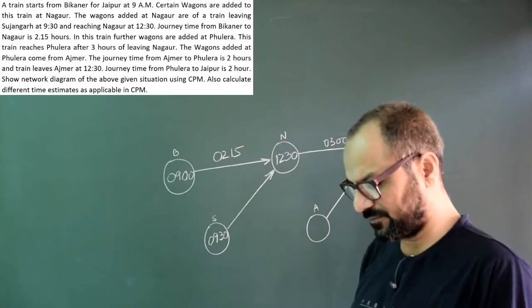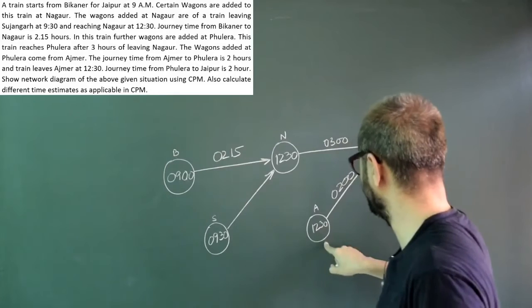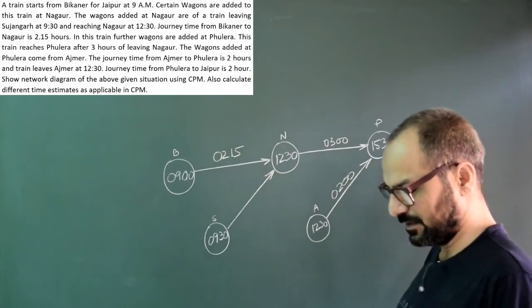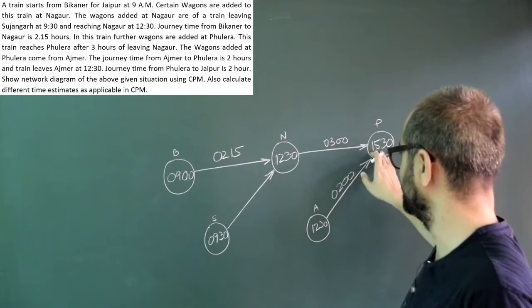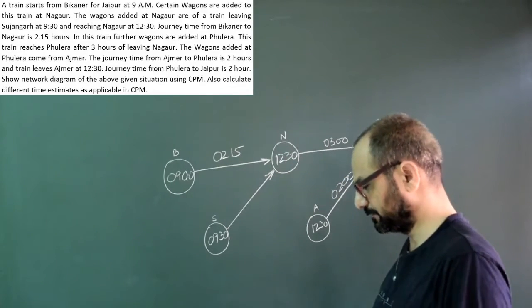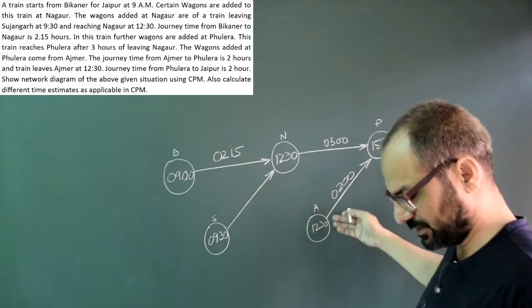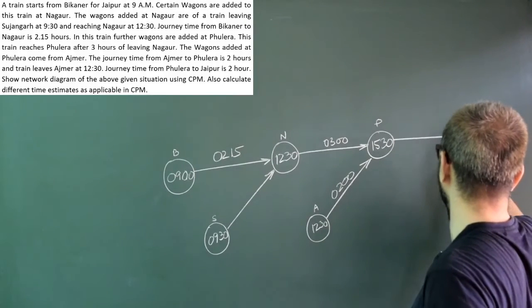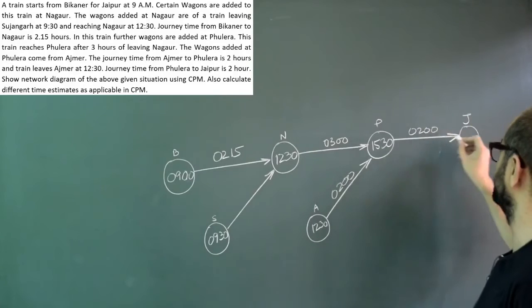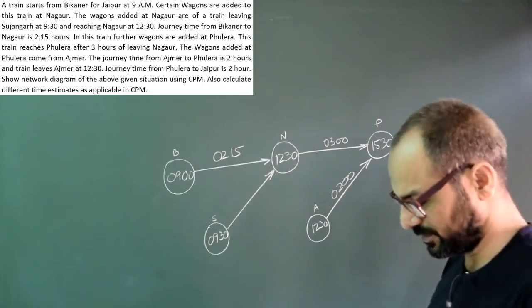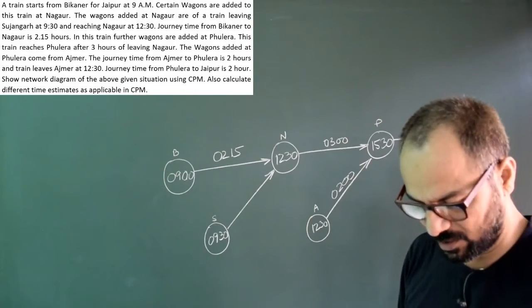The journey time from Ajmer to Phulera is 2 hours. The train left at 12:30. It should have been here at 14:30 but it is here at 15:30, so probably this train arrived early and is waiting. The journey time from Nagore to Phulera is 3 hours. The train leaves Ajmer at 13:30. Journey time from Phulera to Jaipur is 2 hours. The train reaches at 17:30, which is 5:30 PM. They are saying show the network diagram using CPM and calculate different time estimates.